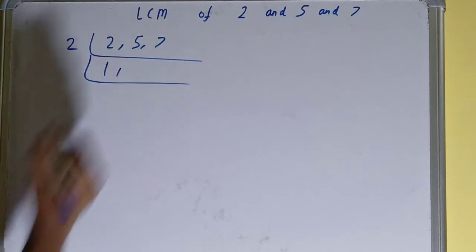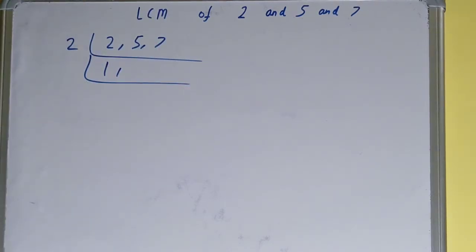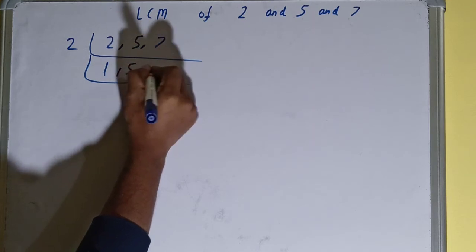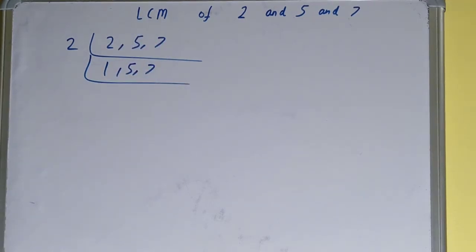So this 2 will become 1, and the 5 and 7 are not divisible, so we'll just copy them down. We'll be getting 1, 5, 7.